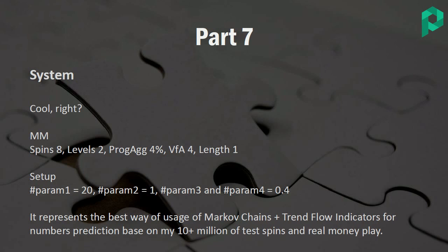For parameters 3 and 4, which we use as a condition — the trend flow indicator — I'm currently using 0.4 and having the maximum success with it. I would say this is a key golden ratio. You can also give it a try with 0.38 or similar, but with 0.4 I have great success.